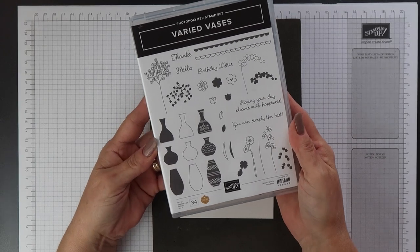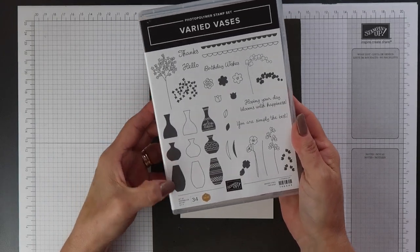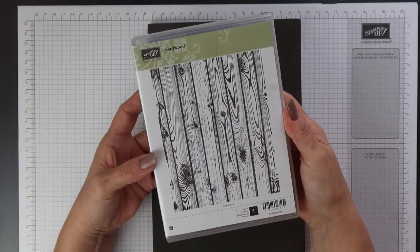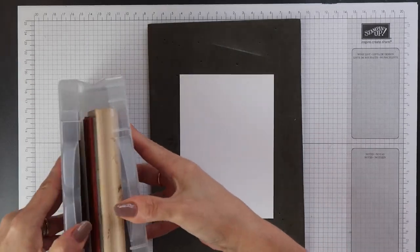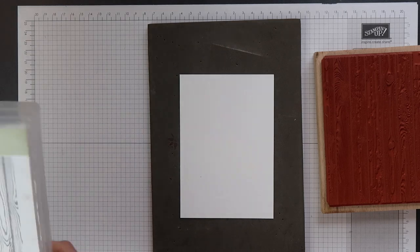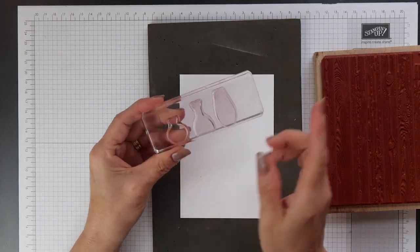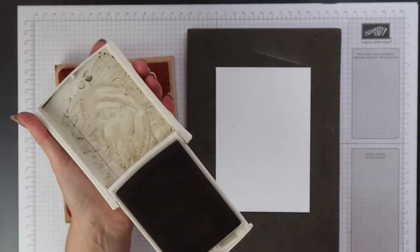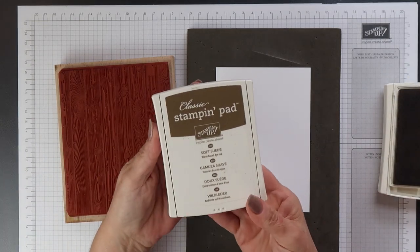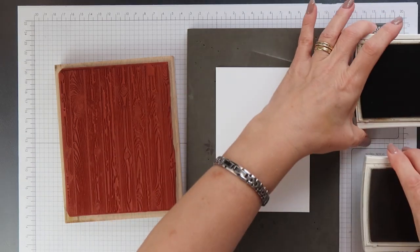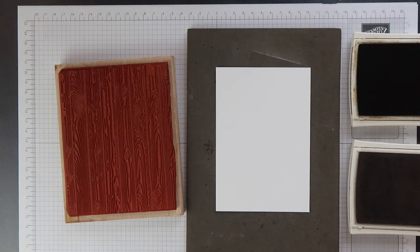To do this technique you need a solid stamp and I'm using these vases from the varied vases stamp set and you also need some sort of pattern stamp and for this I'm using the hardwood stamp which is a background stamp. For ease I've mounted all three vases on one single block. I'm going to use two colours of ink for this demonstration. I'm going to use Sahara Sand and Soft Suede. You generally want a lighter colour ink and a darker colour ink for this technique.